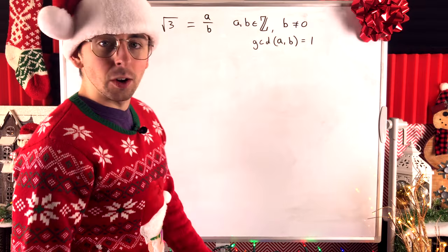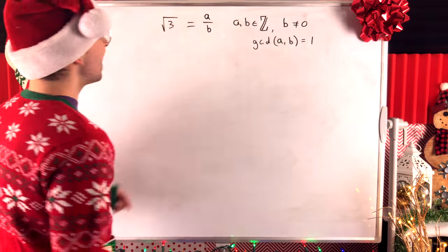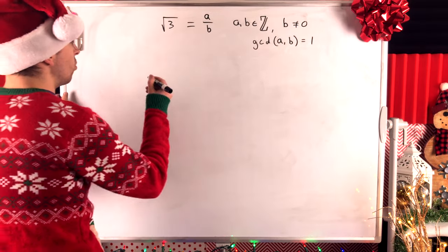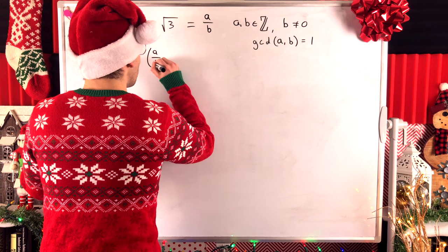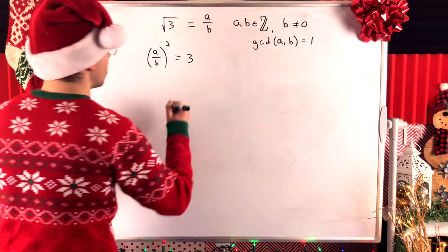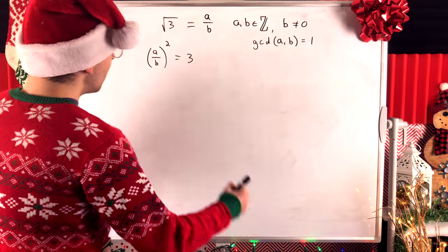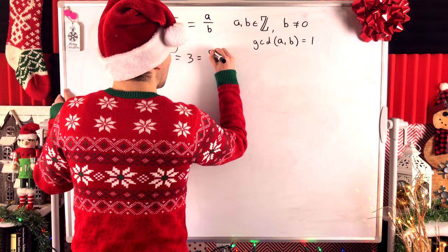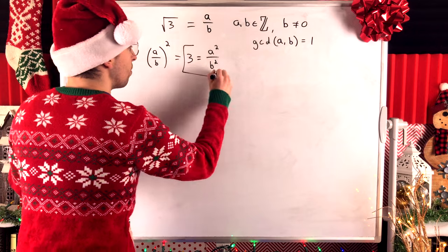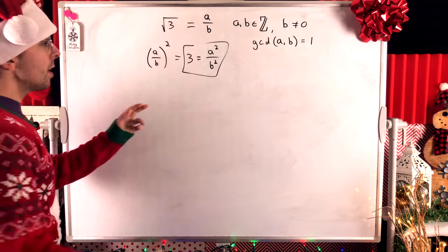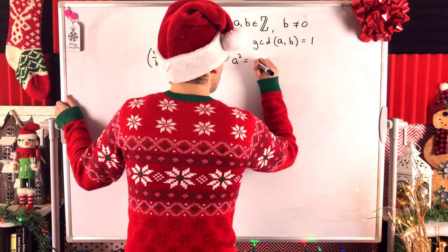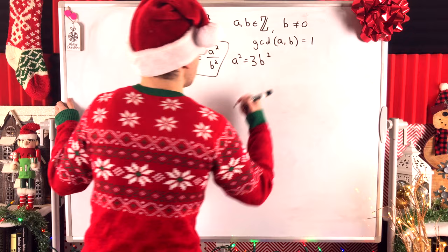Thus, it can't be the case that we can write the square root of 3 like this. Now, of course, knowing this, we can square both sides of the equation to yield that A over B squared must be equal to the square root of 3 squared, which is equal to 3. Now, A over B all squared is A squared over B squared. So, then, just focusing on this part of the equation, we could multiply both sides by B squared to see that A squared must be equal to 3 times B squared.